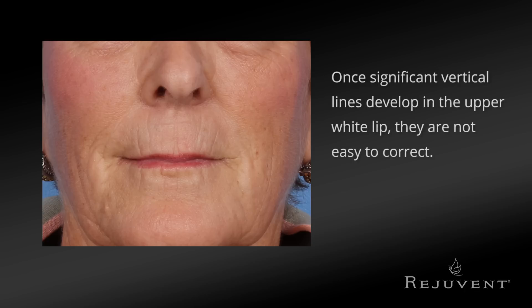Once significant vertical lines develop in the upper white lip, trying to correct them with filler runs the risk of the upper lip becoming more convex in appearance, which can lead to more of an ape-like appearance and is not attractive.